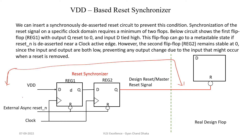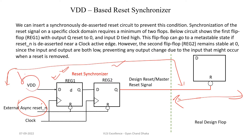Here we have our asynchronous reset signal, and instead of directly applying this signal to the reset pin of our design flip-flops, we have introduced two flip-flops. The input of the first flip-flop is connected to VDD — that is, the power supply — and the output is connected to the second flip-flop input pin. The second flip-flop output pin is basically connected to all the reset pins of our design flip-flops.